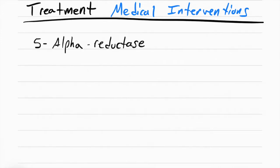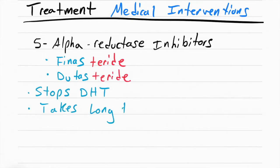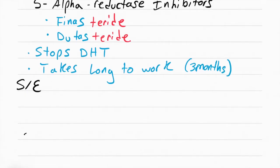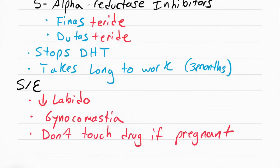The medical interventions are these drugs called 5-alpha reductase inhibitors, like finasteride and dutasteride. What these do is they stop DHT. These take a long time to work, like three months, and they have pretty bad side effects like decrease in libido, gynecomastia so they get man boobs. You have to make sure you don't touch this drug if you're pregnant, because this drug can be absorbed through the skin if you touch the tablet and it'll cause birth defects in male babies. As you can imagine, patients don't stay on this drug very long because of these side effects.